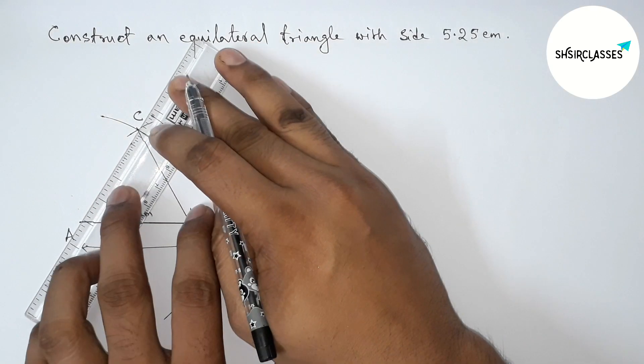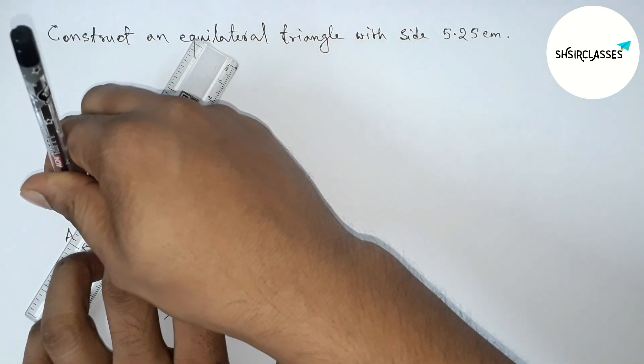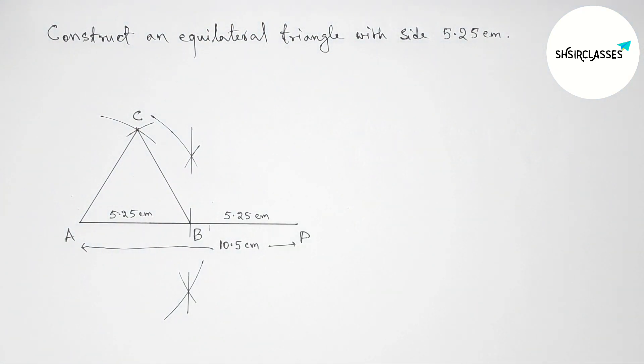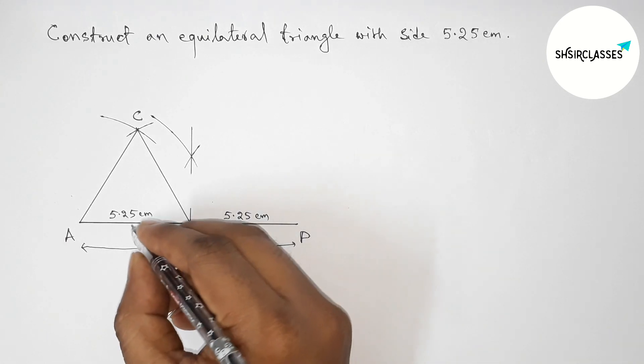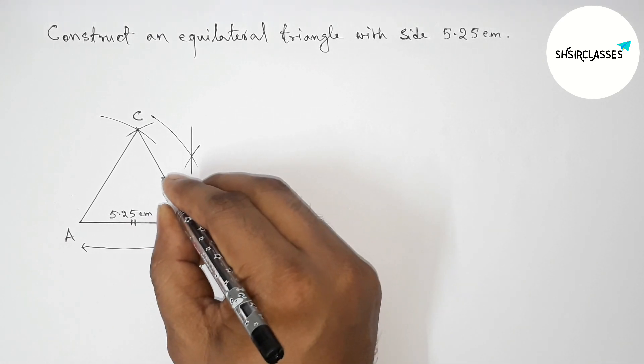First, then joining the side AC to get our required equilateral triangle. So we got our required equilateral triangle.